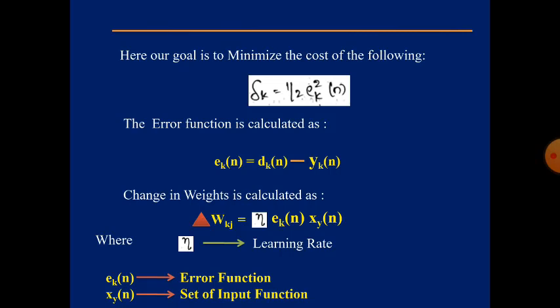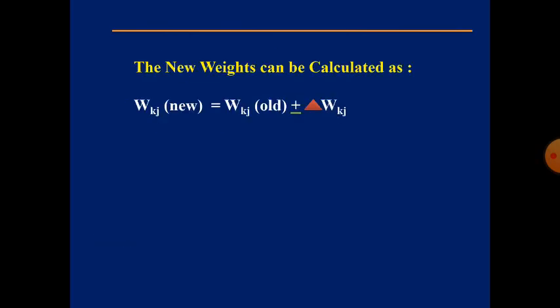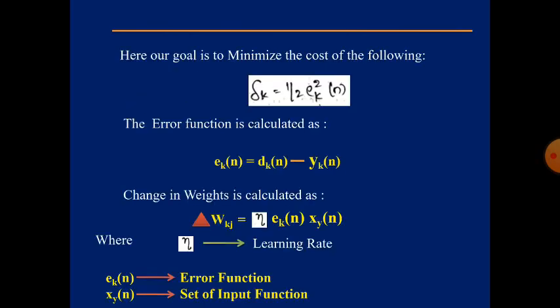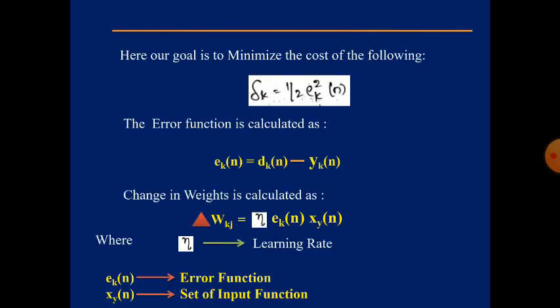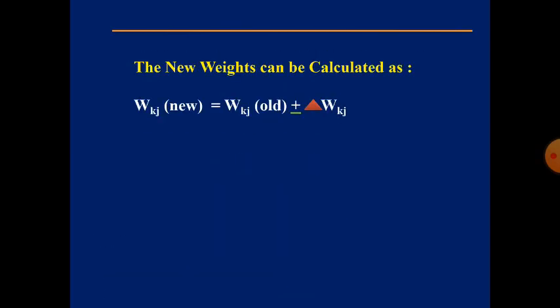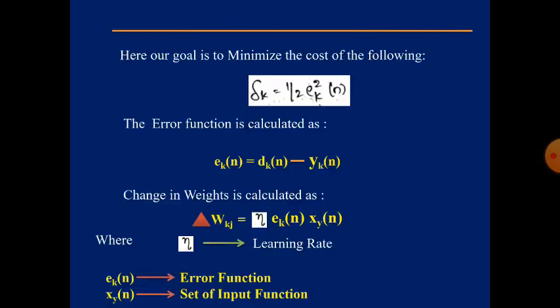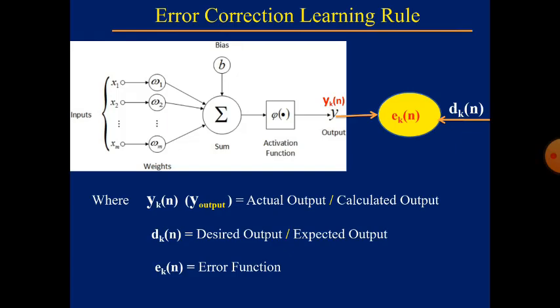Here η is the learning rate, ek(n) is the error function, and xj(n) is the input. This change in weight is added to the old weight to obtain the new weight. The above process is applied repeatedly until the error function becomes negligible or reaches zero. That concludes the error correction learning rule.